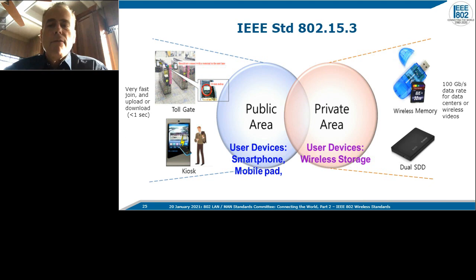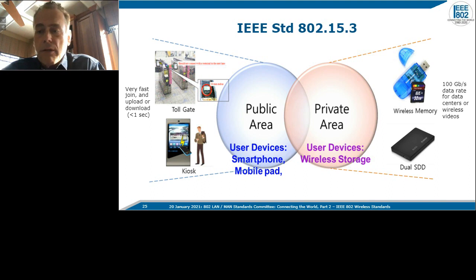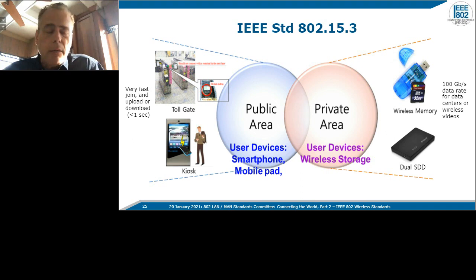802.15.3 is a high-speed, very low-cost network with very fast join times and high-speed downloads in the 100 to 200 gigabit per second range. One example use case is kiosks, where a phone can be programmed with a movie in well under one second. It meets the need for uploading and downloading in a mobile environment, but is also used in data centers and wireless video.